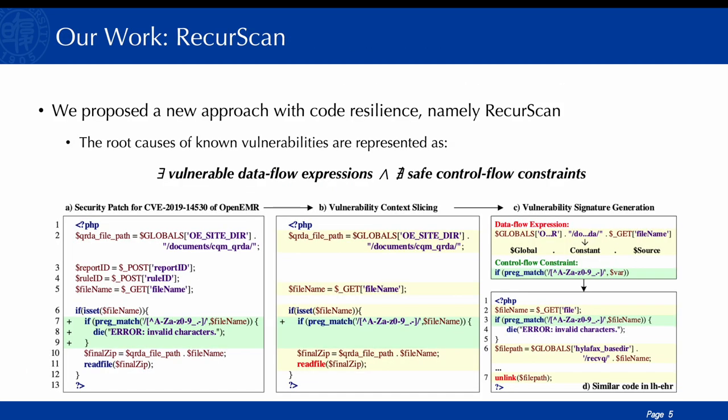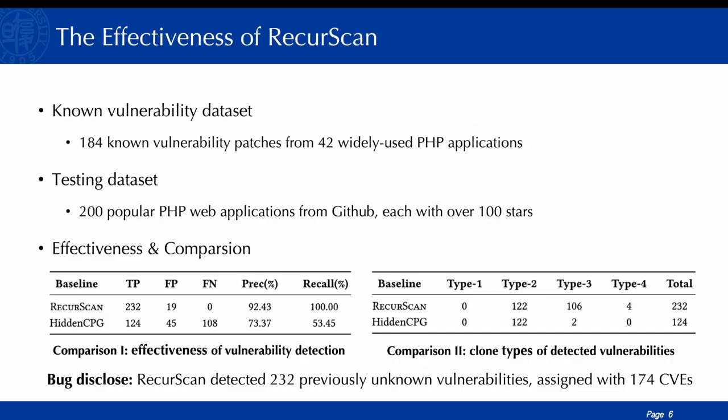To address such limitations, we propose a new approach, namely RecurScan, which is more resilient in detecting similar code during recurring vulnerability detection. In the evaluation, the performance of RecurScan is remarkable. Across 200 popular PHP web applications, RecurScan successfully detected 232 unknown vulnerabilities, which were assigned 174 CVEs.